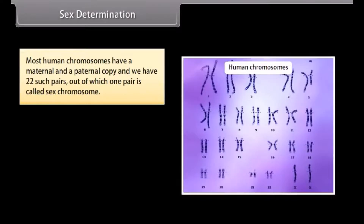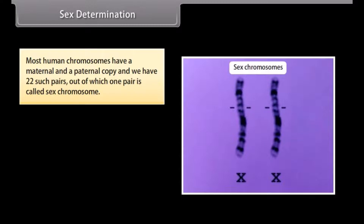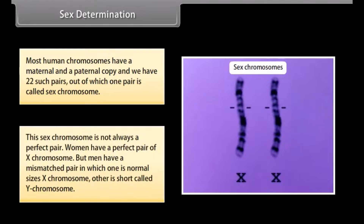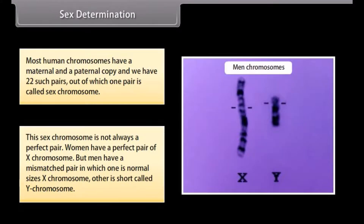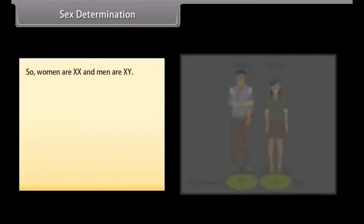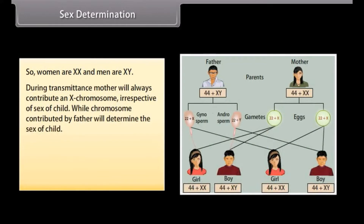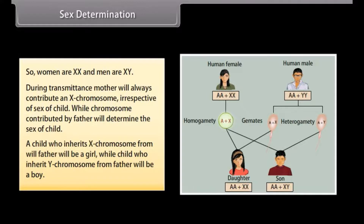Sex Determination: Most human chromosomes have a maternal and a paternal copy, and we have 22 such pairs, out of which one pair is called the sex chromosome. Women have a perfect pair of X chromosomes, but men have a mismatched pair in which one is a normal-sized X chromosome and the other is a short chromosome called the Y chromosome. So women are XX and men are XY. During transmission, the mother will always contribute an X chromosome irrespective of the sex of the child, while the chromosome contributed by the father will determine the sex of the child. A child who inherits an X chromosome from the father will be a girl, while a child who inherits a Y chromosome from the father will be a boy.